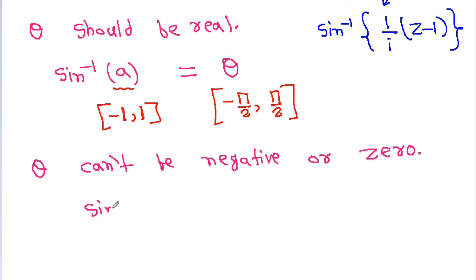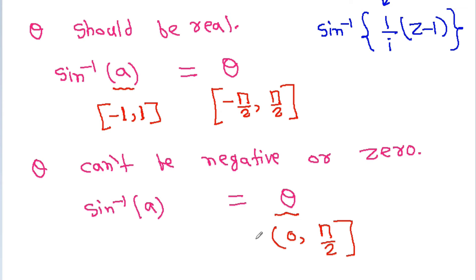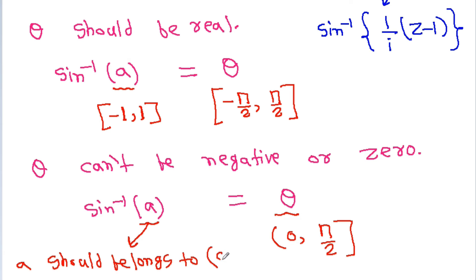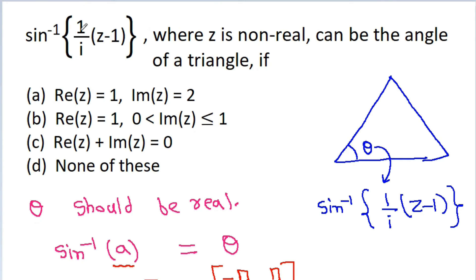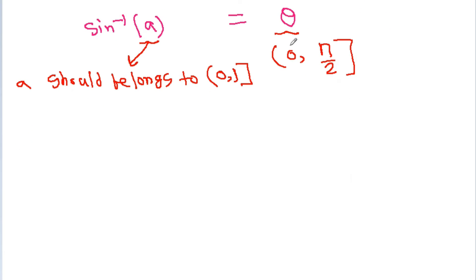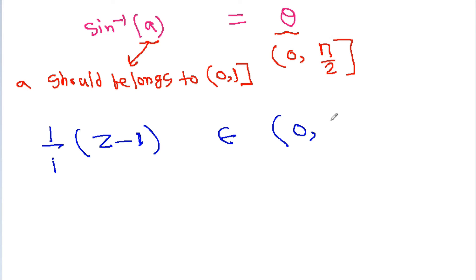So if sin inverse(a) = theta, then the possible value for theta is from open 0 to π/2. Since theta is from (0, π/2], that means a should belong to (0, 1]. In place of a we have 1 / (iz × (g-1)), so 1 / (iz × (g-1)) should belong to (0, 1].